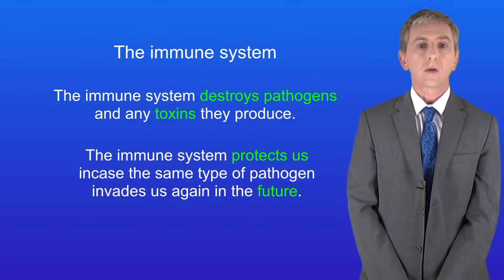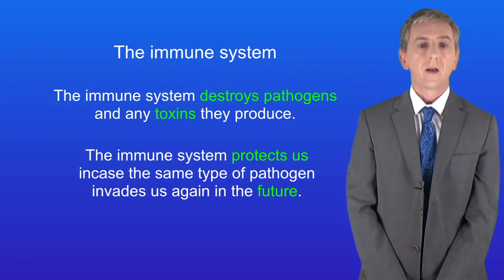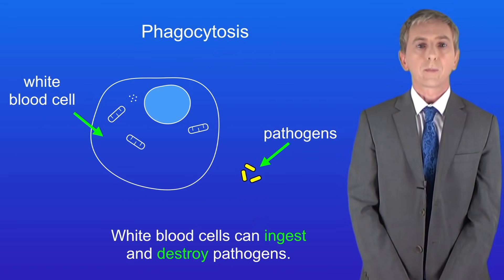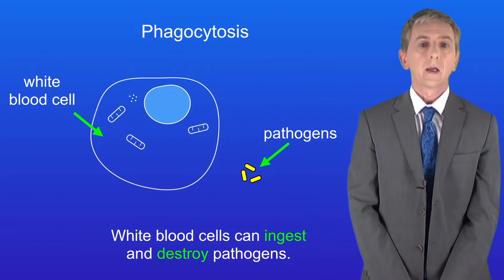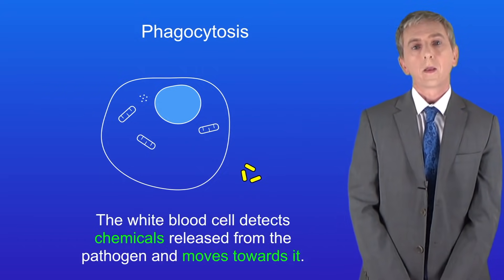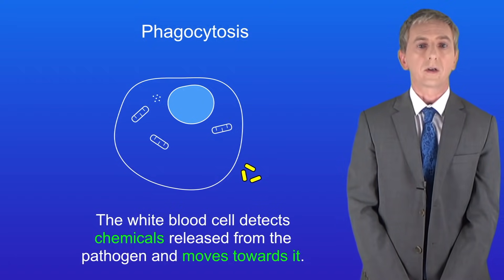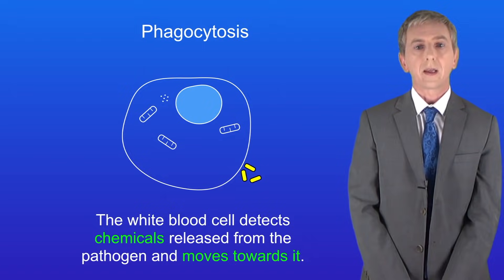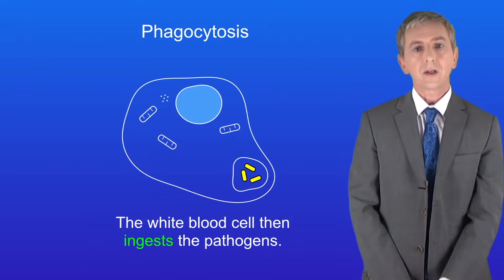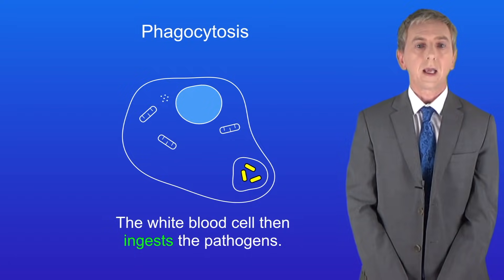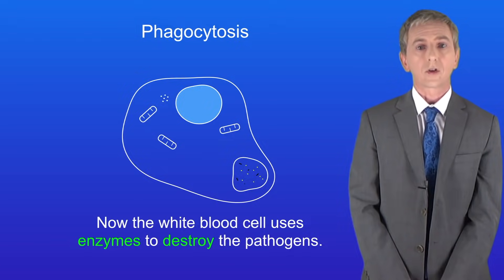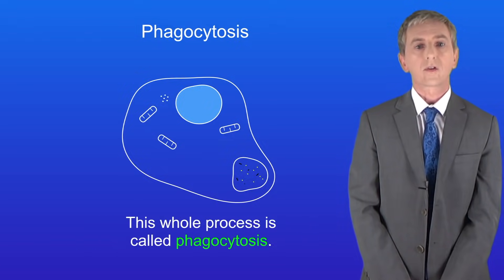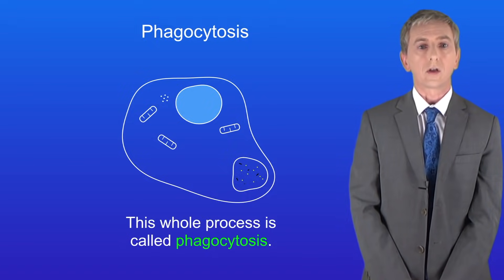The first key fact you need to understand is that the immune system involves the white blood cells. These have got three functions. Firstly white blood cells can ingest and destroy pathogens, as shown here. The white blood cell detects chemicals released from the pathogen and moves towards it, then ingests the pathogen. The word ingest means take in — in the exam make sure you say ingest and not eat. The white blood cell then uses enzymes to destroy the pathogens. This whole process is called phagocytosis and you should use that word in your exam.